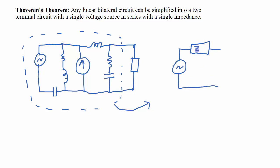This is the Thevenin equivalent impedance and this is the Thevenin equivalent voltage. We're talking about AC, so I'm going to say that these have a magnitude and a direction — in other words, a magnitude and a phase shift. And then that is connected to whatever the load is.